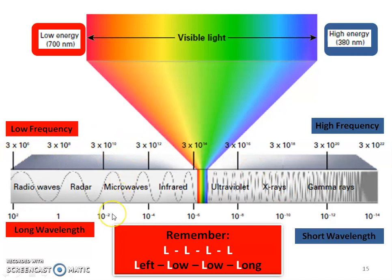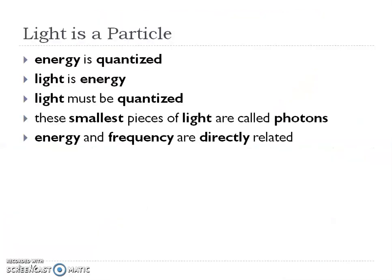These are our frequency values and our wavelength values. If I give you a wavelength value, you can give me a frequency, or vice versa. This visible light is going to be really important because we're going to talk about the different energies of the different colors given to us by things like neon signs. Light is also a particle — light is energy, it's moving, but it's also quantized. If we take light and chop it into the smallest particle possible, that's going to be called a photon.